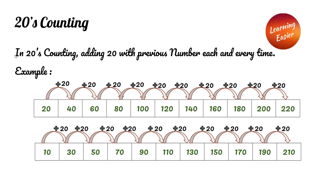Twenties counting. In twenties counting, we add twenty with the previous number each and every time. Twenty plus twenty equals forty, forty plus twenty equals sixty, sixty plus twenty equals eighty, eighty plus twenty equals one hundred, one hundred plus twenty equals one hundred twenty, and so on.